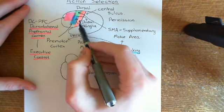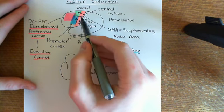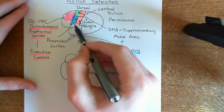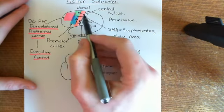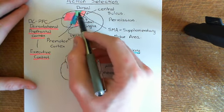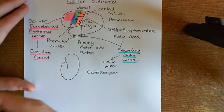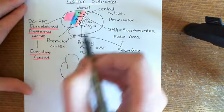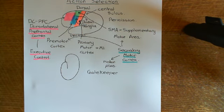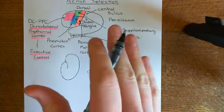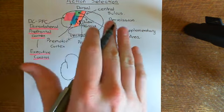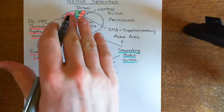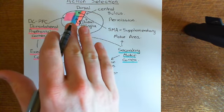The basal ganglia give permission for motor plans created by the secondary motor cortex to be transferred to the primary motor cortex and relayed down to the motor neurons, and that's how they are so important in the initiation of voluntary movement. Without this permission, the secondary motor cortex is going to really struggle to send the motor plan to the primary motor cortex. This is why in Parkinson's disease, even though the secondary motor cortex creates motor plans, it won't get permission to send them forward, causing real problems in initiating movements.